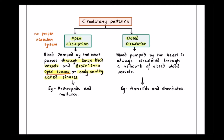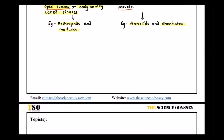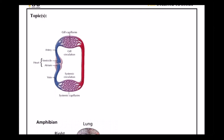In closed circulation, there is a network of closed blood vessels through which the blood is transported, so it has a proper vascular system. Open circulation is observed in arthropods and mollusks, whereas closed circulation is observed in all chordates and also in annelids.